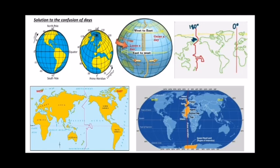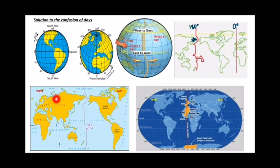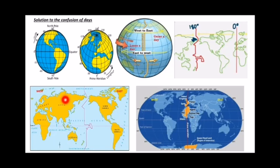When we consider the IDL as reference, the day on Earth starts in the west. With the prime meridian as reference, the day starts in the east because that is where the sun rises. But with the IDL in the center of the map, Asia comes to the west side, so the day starts from the west and ends toward the east - toward the South American and North American continents.